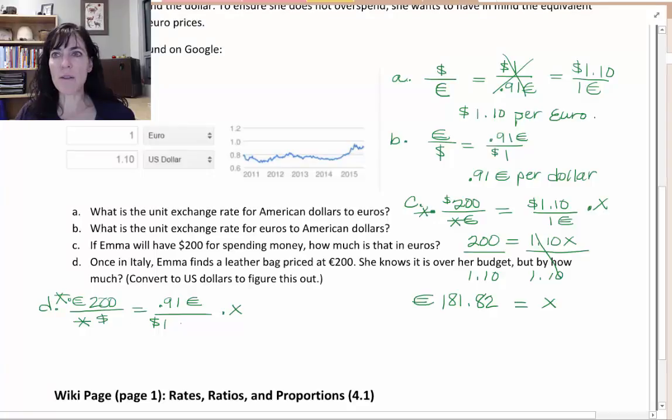These x's cancel on the left. And on the right, I'm left with point nine one x. On the left, I have x - it's canceled, so I just have a two hundred.